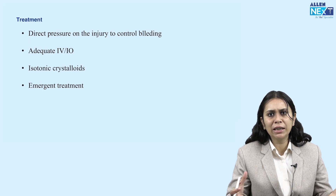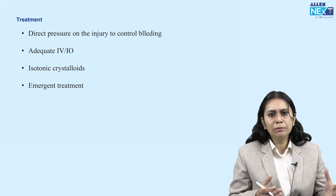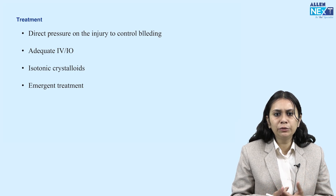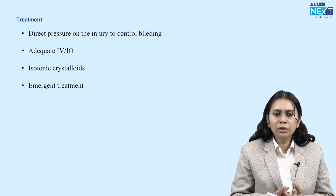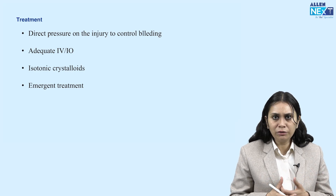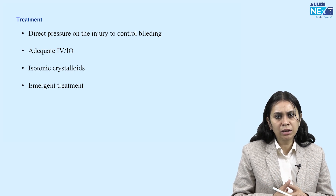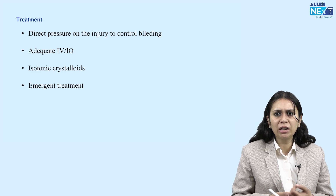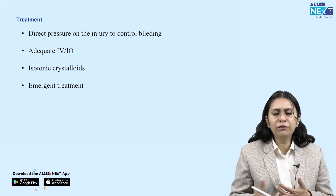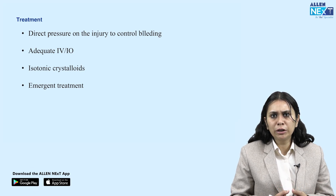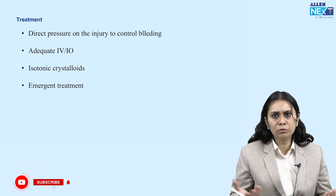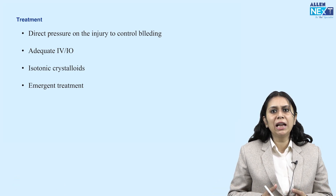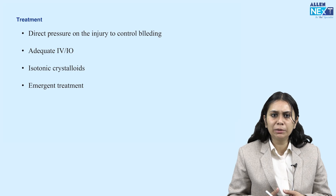If it is hypovolemic shock with visible external bleeding, apply direct pressure to control bleeding and take an IV line to start fluid. We can also use ultrasound to look for free fluid in the peritoneum; if present, the patient may need laparotomy for a continuous abdominal bleed.